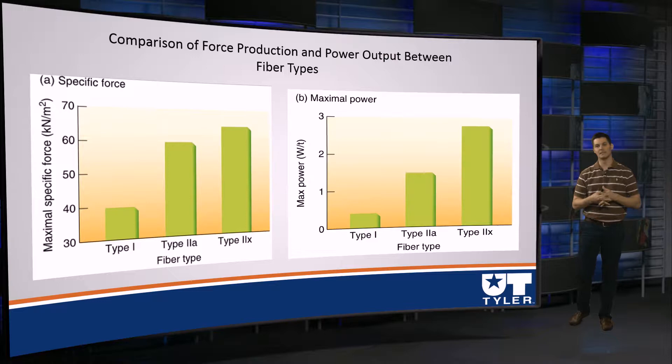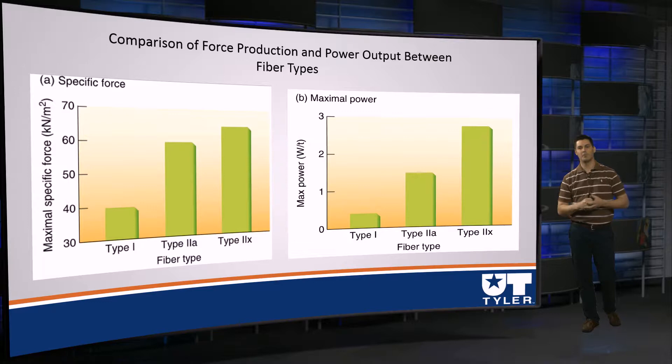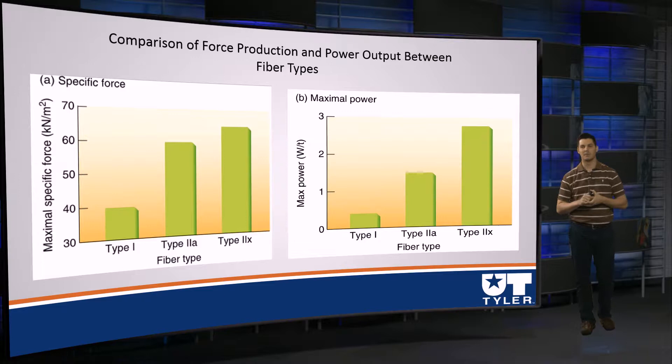We've talked about fiber types earlier on in the semester, and I know that's something relatively new to you. I want to review it and point out three of the big main points we're going to discuss when we start talking about training and how they affect fiber types. The first is to compare force and power output between fiber types. In the first graph — the one on the far end of the screen — we'll look at specific force of muscle.